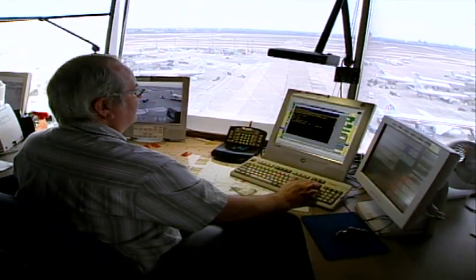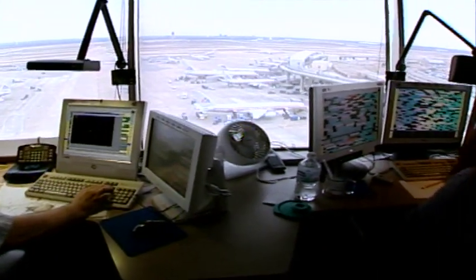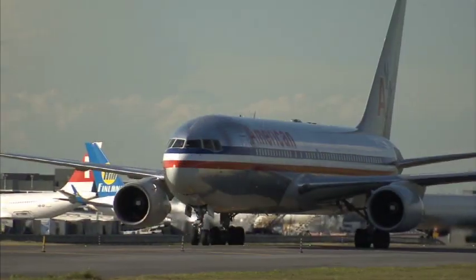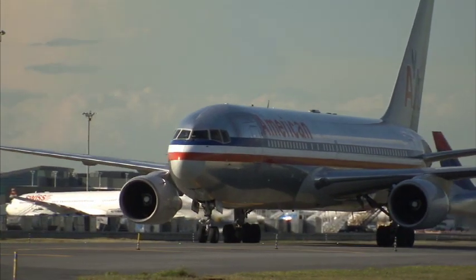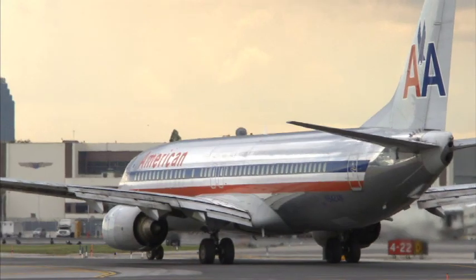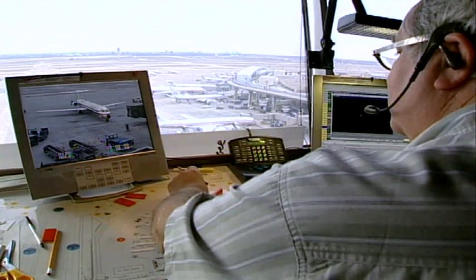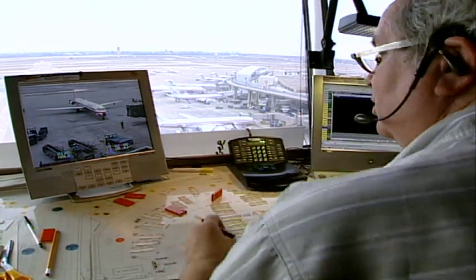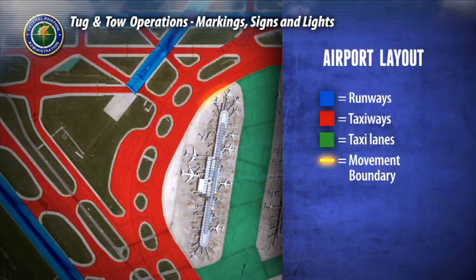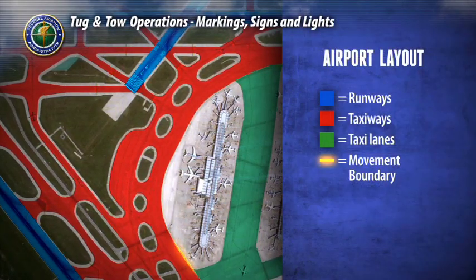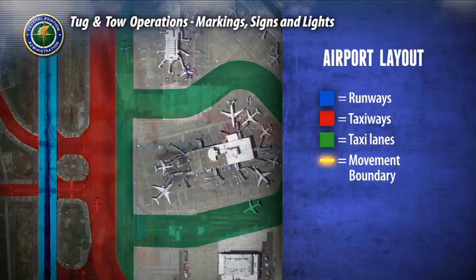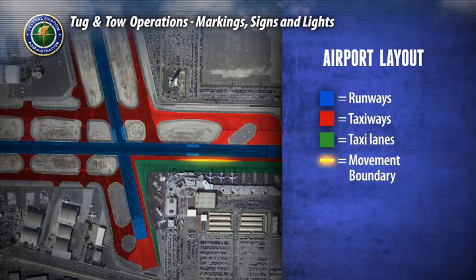Taxi lanes are like secondary streets. They provide a path for aircraft from a ramp to a taxiway. Taxi lanes may be considered movement or non-movement areas depending on their configuration at individual airports. Some airports' taxi lanes are controlled by ramp towers. Since each airport's configuration may be unique, it is critical you know where your non-movement area boundary marking is located. Study your airport's diagram.